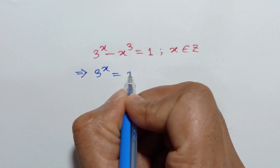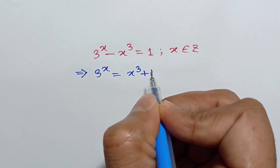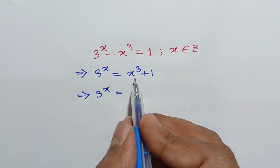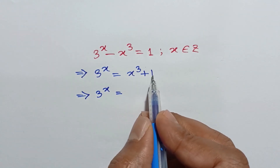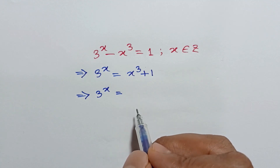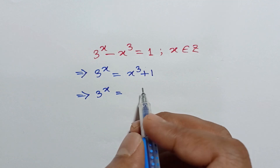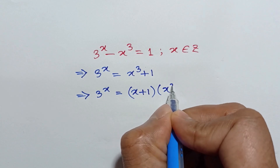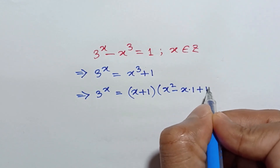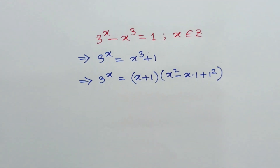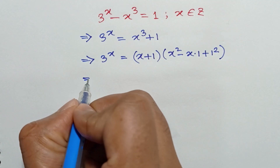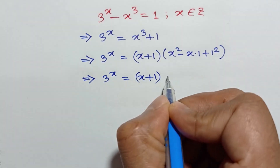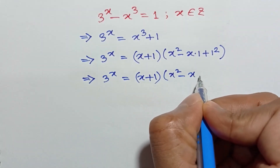Applying the formula a cube plus b cube is equal to a plus b times a square minus ab plus b square, we can write x plus 1 times x square minus x times 1 plus 1 square. So 3 to the power x is equal to x plus 1 times x square minus x plus 1.